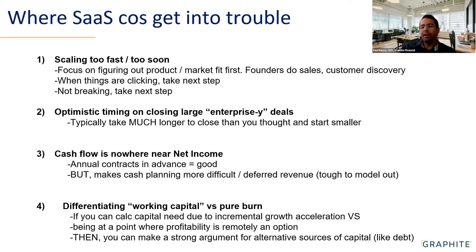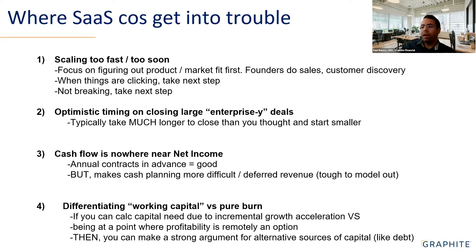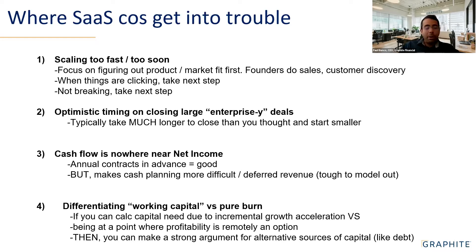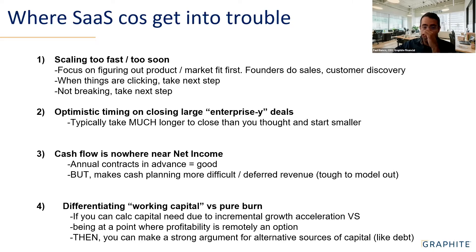Another issue is when cashflow is nowhere near net income. The way we're building a model is accrual basis because that's how investors look at it, but cash is just what's in your bank. For example, if you're a SaaS company with annual contracts, that's great for cashflow — but if you land a bunch in a row, you already have the cash and you're just recognizing the revenue over time. For SaaS companies with lots of annual and quarterly contracts, cash can swing wildly — a month with a $100K loss on the P&L but you could burn half a million dollars.